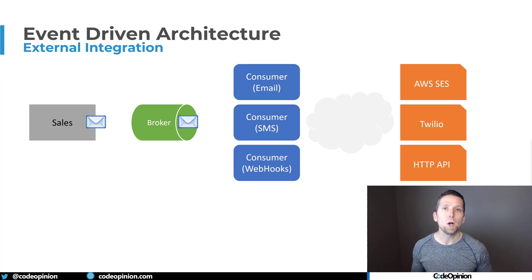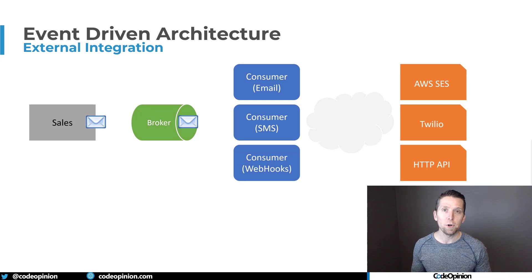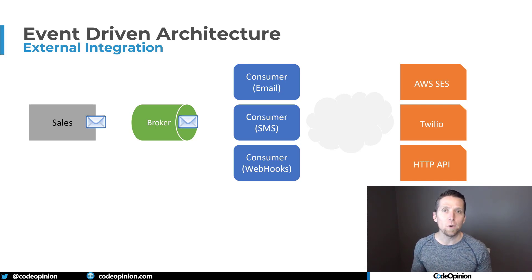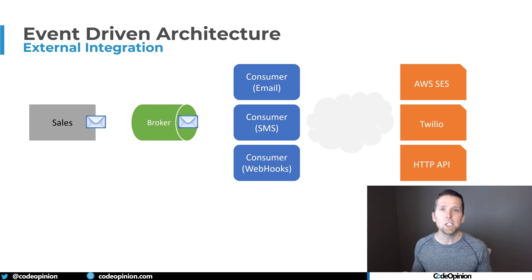The first practical example is third-party services — how you interact and deal with them. In most cases, when something happens within your system, an event, you need to interact and call out to a third-party service. We have an example of a sales boundary that's going to publish an event for an order being placed, and different consumers that need to handle different integrations. For example, one consumer handles sending out an email via AWS SES, another sends an SMS via Twilio, and a third handles webhooks sending requests to other HTTP APIs.